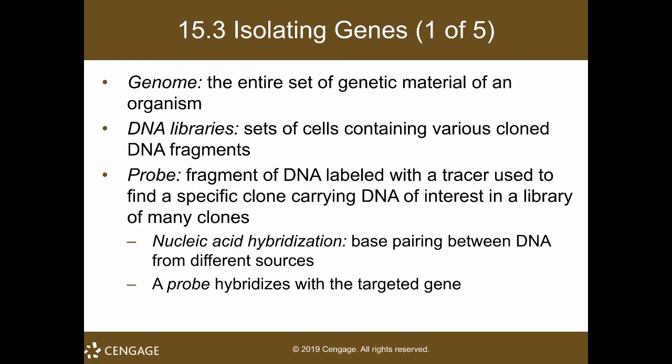Like a regular library, you should be able to store and retrieve items. To retrieve a desired DNA fragment from the library, you use a probe. A probe is a fragment of DNA labeled with a tracer that is complementary to the one you are looking for. You use this probe to find a specific clone carrying your gene of interest. For example, you take the whole chromosomal DNA, fragment it, insert those fragments into bacterial cells, and create a library. Then, when you want to retrieve a single gene from that library, you use the probe.